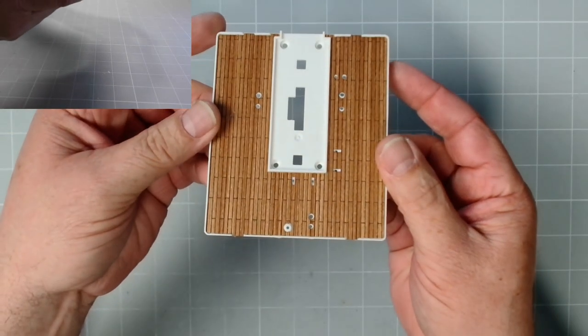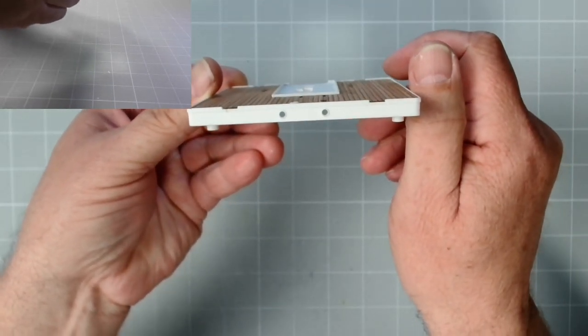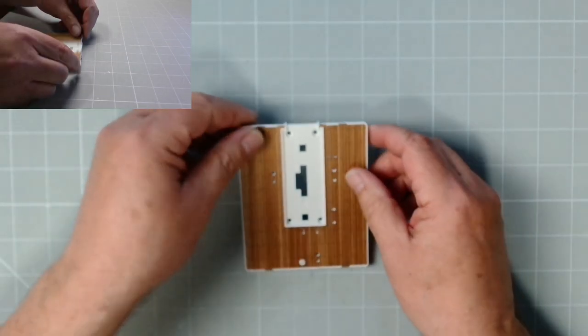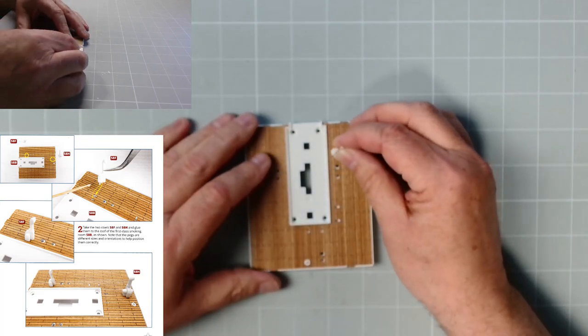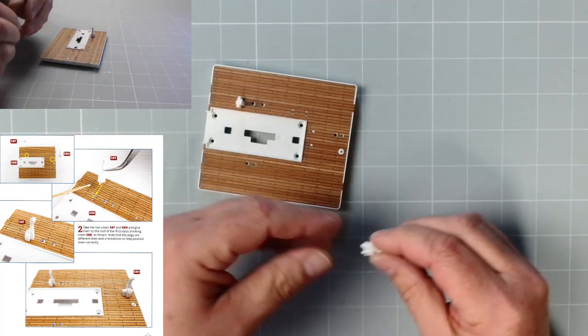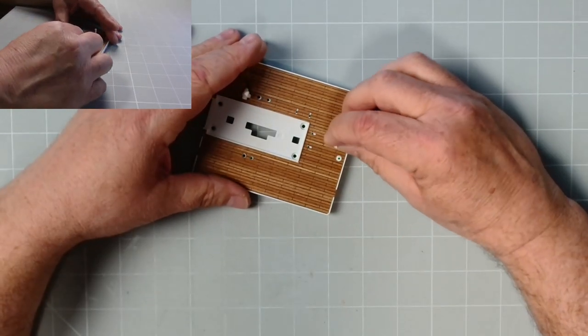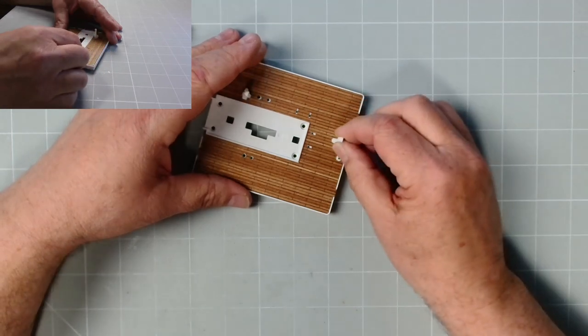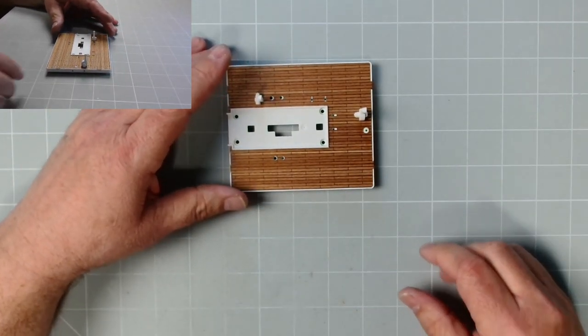Well there we go, that's the decking in place. That looks absolutely brilliant. Now nice and flat, no ripples in it whatsoever. Doesn't take a lot of glue. Now we need the coals, so that is 58F, and 58H goes there like that. Looking brilliant.